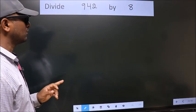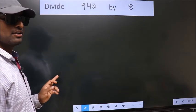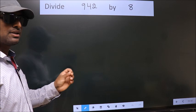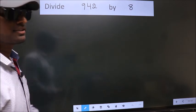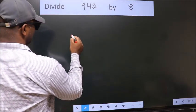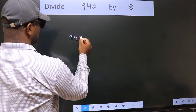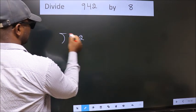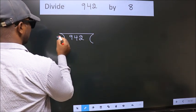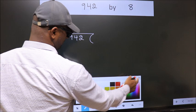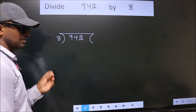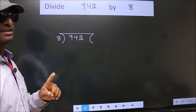Divide 9.42 by 8. To do this division, we should frame it in this way. 9.42 here, 8 here. This is your step 1. Next.